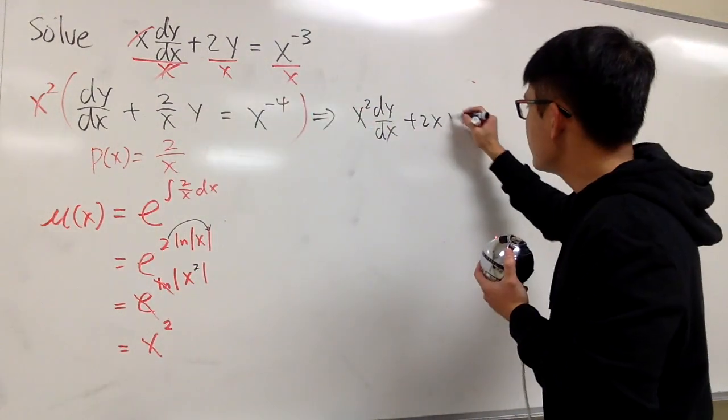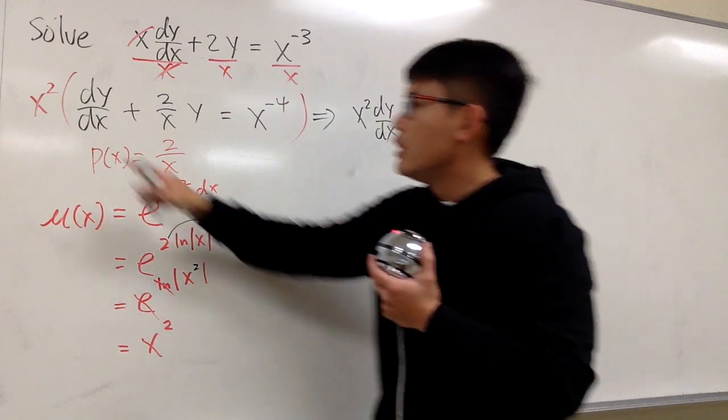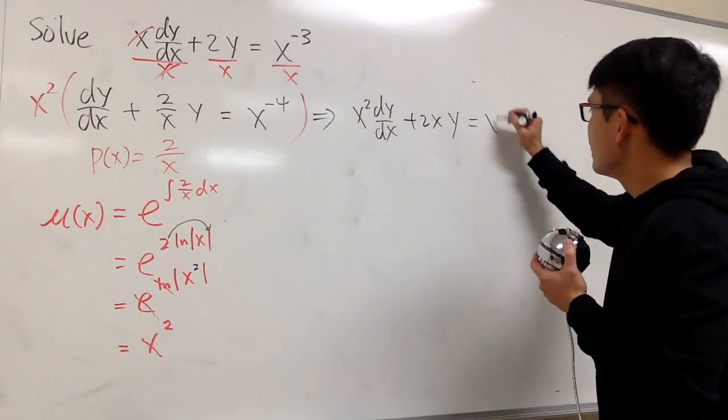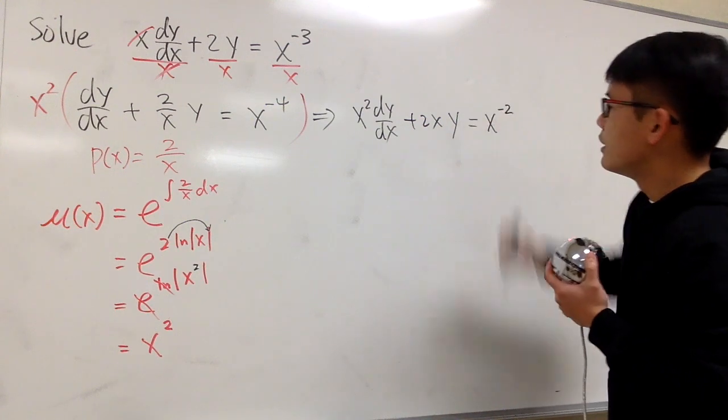And then we have the y on the side. This is equal to x squared times x to the negative 4. You know you will get x to the negative 2.